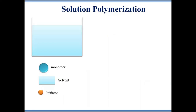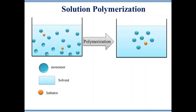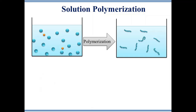Solution polymerization is very similar to bulk polymerization except that the monomer, initiator, and chain transfer agents are dissolved in a non-reactive solvent, so the polymerization steps remain the same. First the monomer is taken, then the initiator is added and the reaction mixture is heated to initiate polymerization. The reaction results in a polymer which is soluble in the chosen solvent, and heat released by the reaction is absorbed by the solvent, which helps to dissipate the heat. Finally, long chain polymers are formed by reacting two polymer chain radicals.